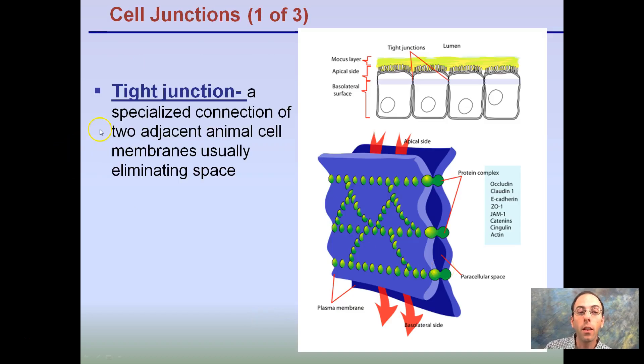Tight junctions. This is a specialized connection of two adjacent animal cell membranes, usually eliminating space. So here's our tight junctions, really close together. Basically, you can think of them kind of like fusing together, super tight junctions, limiting any space.